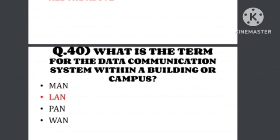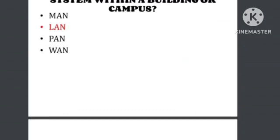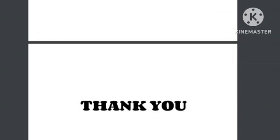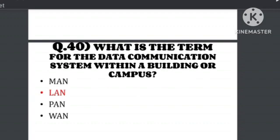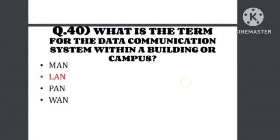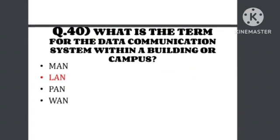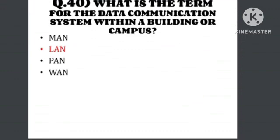Last question: What is the term for a data communication system within a building or campus? The answer is Local Area Network (LAN). A local area network is the communication system used within a building or campus.